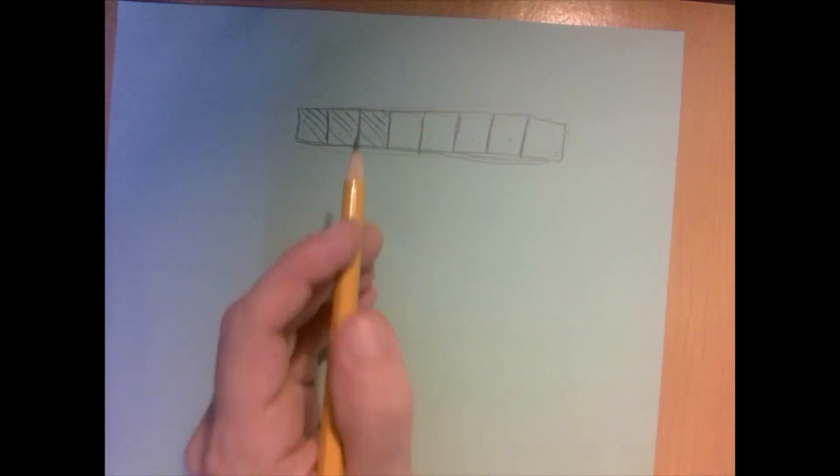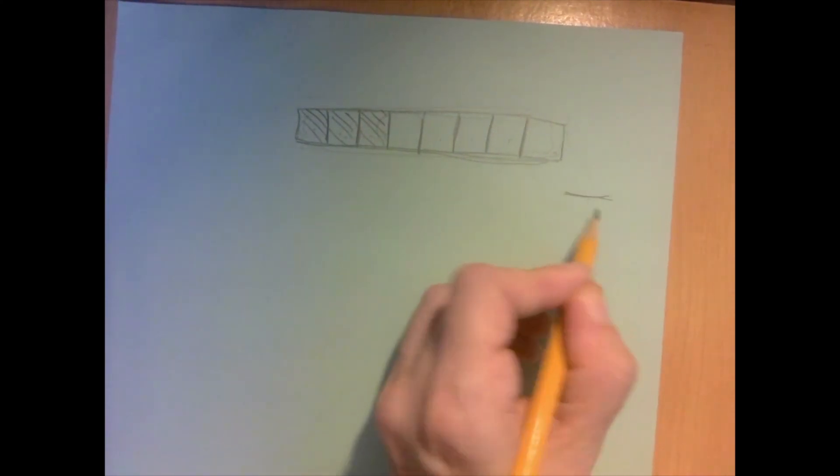One little square here represents one eighth. Why? Because eight equal parts make up a whole.